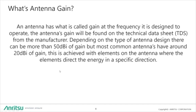Another important subject is antenna gain. An antenna has gain, and you can find that in the technical data sheet from the manufacturer. Depending on the antenna design, there can be more than 50 dBi of gain — generally for large parabolic satellite antennas. More general antennas have about 20 dBi of gain, achieved by using elements on the antenna that direct energy in a specific direction.